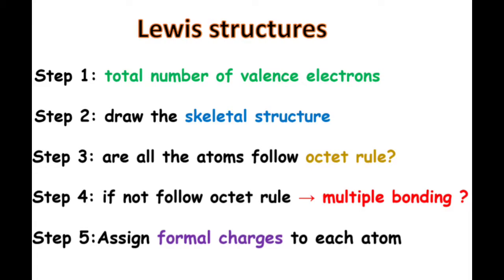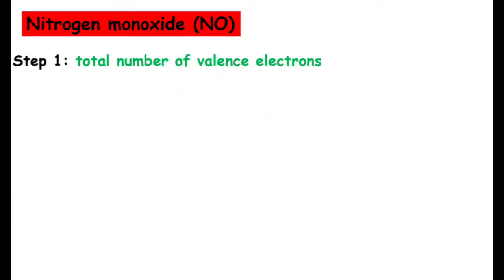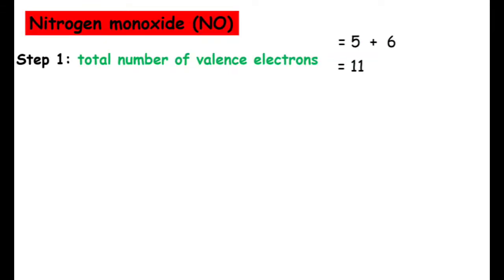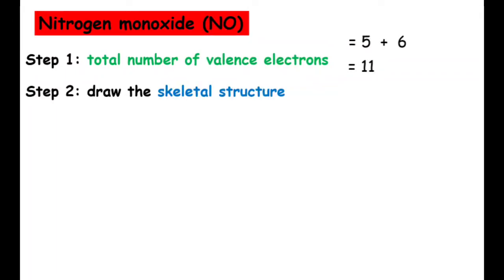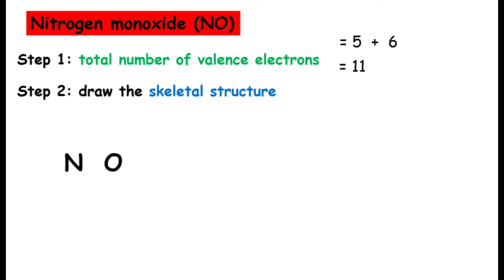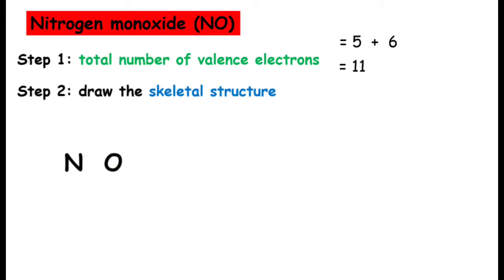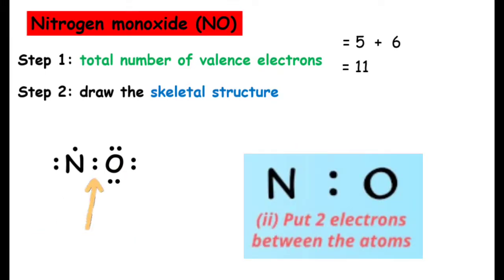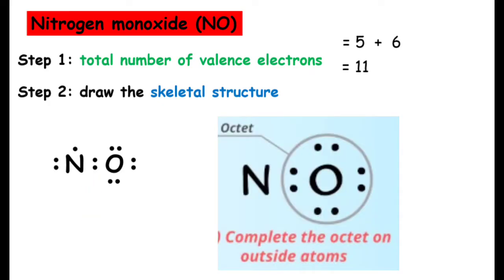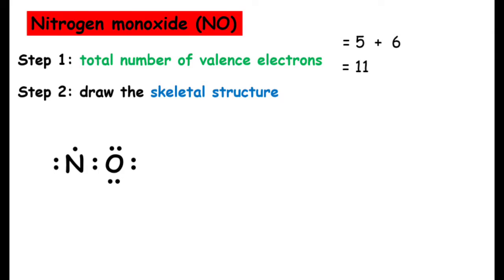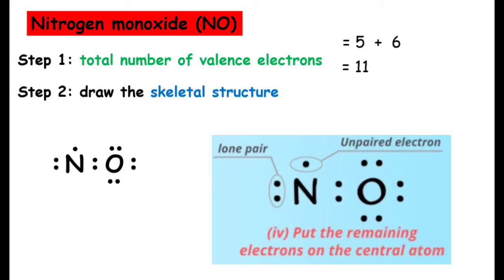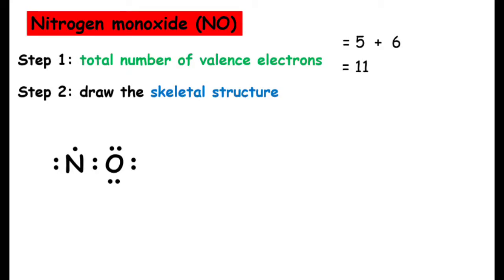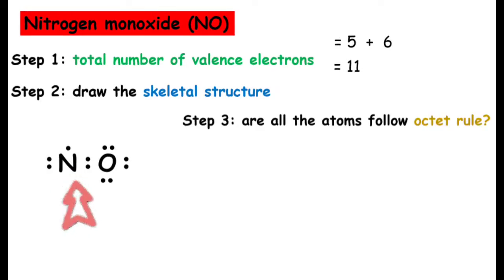Now let's start to discuss the Lewis structure of nitrogen monoxide. For step one, we need to determine the total number of valence electrons in the molecule. There are five valence electrons in the nitrogen atom and six in the oxygen. Next, draw the skeletal structure of nitrogen monoxide — you need to determine which atom is the central atom and which is the terminal atom. Next, put two electrons between the atoms, then complete the octet on the terminal atoms. Lastly, we put the remaining electrons on the central atom. As you can see from the image, the central atom has only five electrons, so it does not fulfill the octet rule.